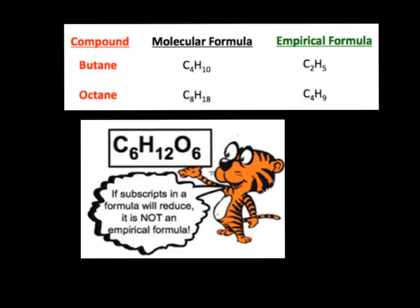Some other examples: Butane gas, that's in lighters, is C4H10, so its empirical formula is C2H5. Octane, which is in gasoline, C8H18, is C4H9 for its empirical formula. If the subscripts in a formula will reduce, it's not an empirical formula.